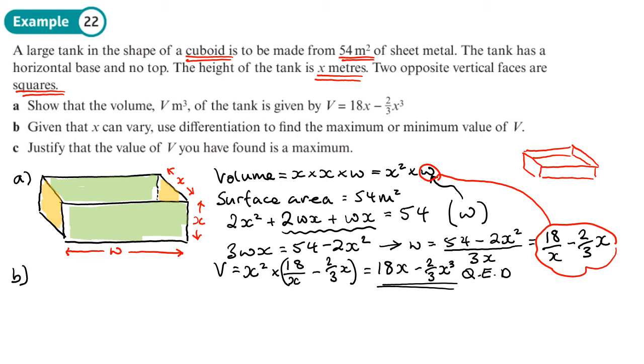Part B. Given that x can vary, use differentiation to find the maximum or minimum volume of V. So we've got our equation with one variable. To find out the maximum or minimum value, we do dV/dx. So that means differentiating this 18x minus 2/3 x cubed. So that will just be 18 when we differentiate 18x. Then the minus 2/3 x, if we differentiate that, we will end up with minus 2x squared.